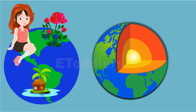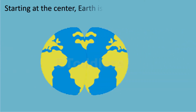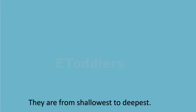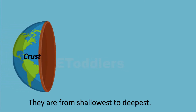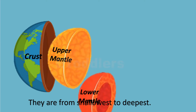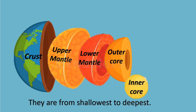Let's explore the layers of the earth. Starting at the centre, earth is composed of five distinct layers. They are, from shallowest to deepest: the crust, the upper mantle, the lower mantle, the outer core, and the inner core.